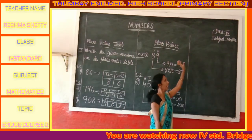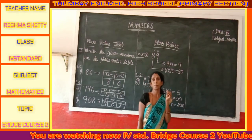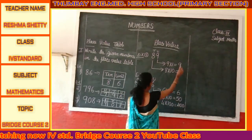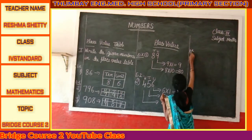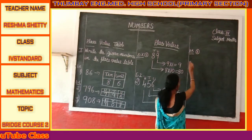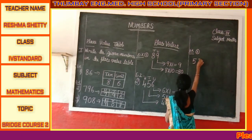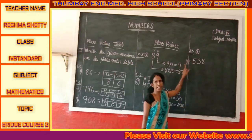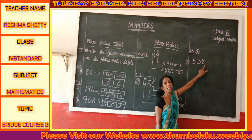Now if I interchange the digits, what happens to the place value? Example 3. Here I have the number 538. If I interchange the number, I get 835.